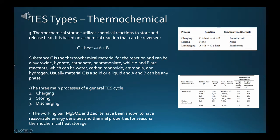Thermochemical storage utilizes chemical reactions to store and release heat, based on a reversible chemical reaction. When substances A and B are combined, substance C is formed, releasing the stored thermal energy. The storage capacity is the heat of reaction when C is formed. Substance C can be a hydroxide, hydrate, carbonate, or ammoniate, while A and B are reactants which can be water, carbon monoxide, ammonia, and hydrogen. Usually material C is a solid or liquid, and A and B can be in any phase.